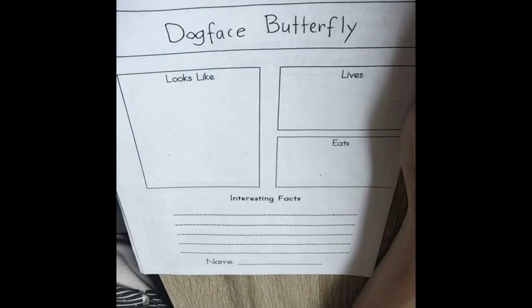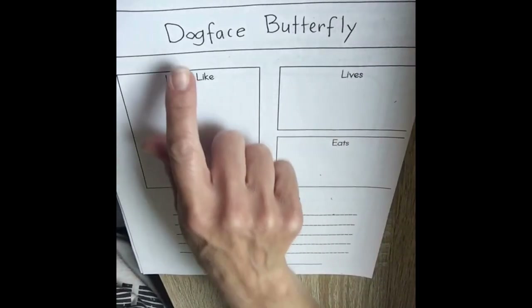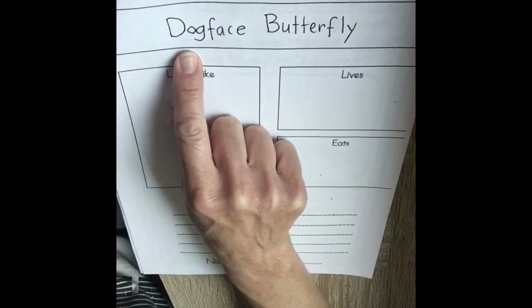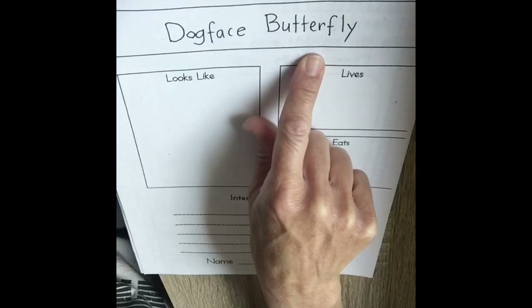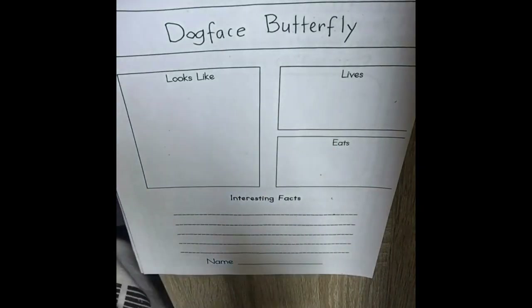Hi everybody! Today we're going to do our Social Studies California unit where we're learning about all of our different state symbols, and we are looking at the dog face butterfly which happens to be our state insect.